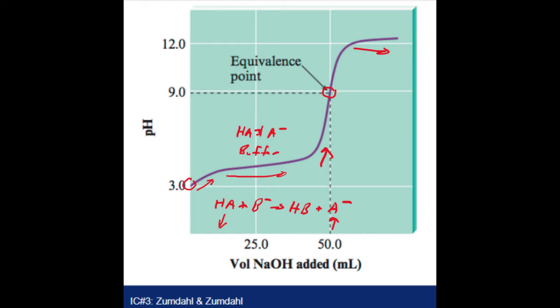Now, in this particular example, they have the equivalence point reached when 50 milliliters of NaOH is added. So let's take a look at this part right here. Let's look at the half equivalence point at 25 milliliters.